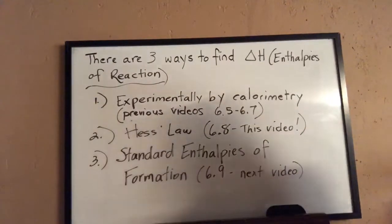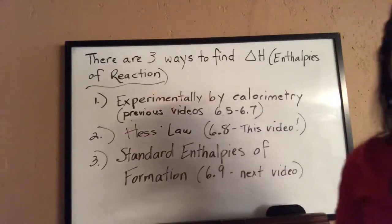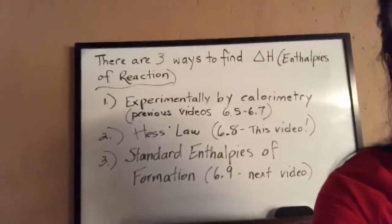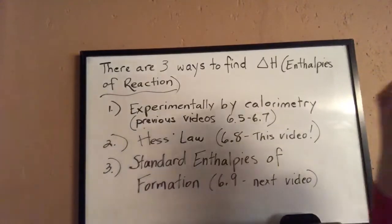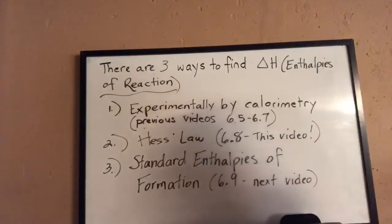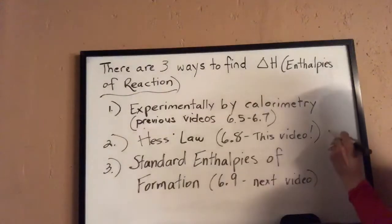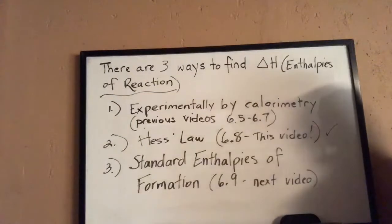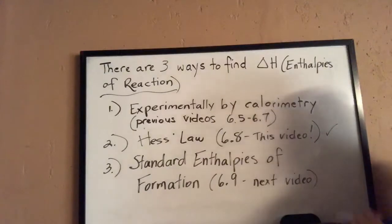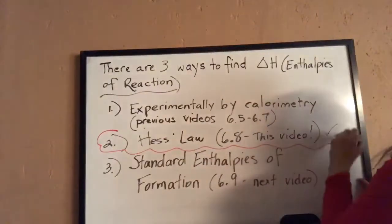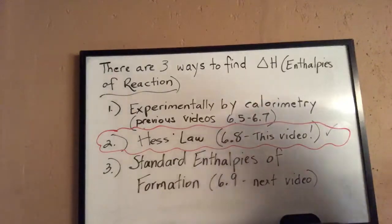There are three ways to find the enthalpies or heat of reaction. One way we already looked at in the previous video was calorimetry, where you can experimentally determine the heat or enthalpy of reaction. Hess's law is another way to determine the enthalpy of a reaction, and that will be covered in this video. Standard enthalpies of formation in section 6-9 will be the next video.